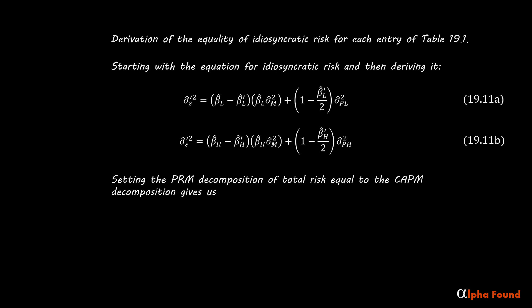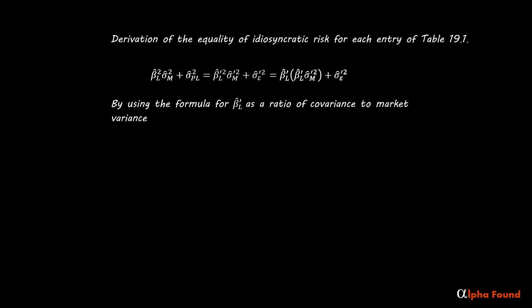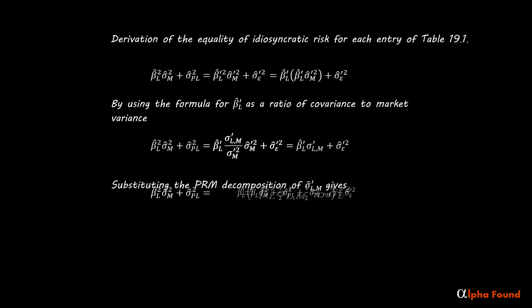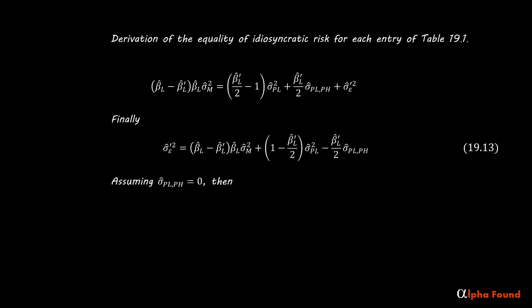Setting the PRM decomposition of total risk equal to the CAPM decomposition gives us this. By using the formula for the low cap M-beta as a ratio of covariance to market variance, and substituting the PRM decomposition of the covariance between the low cap M-beta portfolio and the market gives the result. Moving things around a bit gives us the next step. Moving things around a bit more gives another form. Finally, assuming the covariance between the perturbations is zero, we arrive at the final equation.